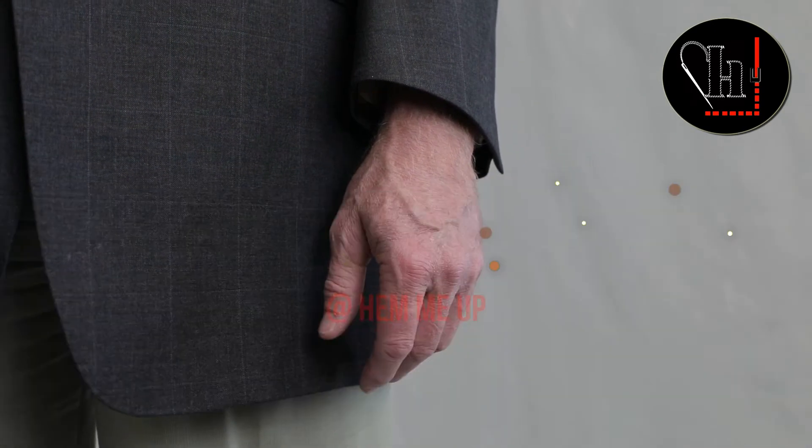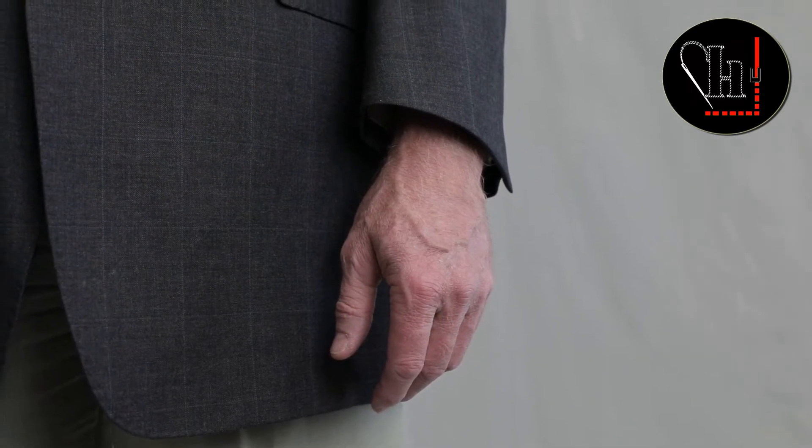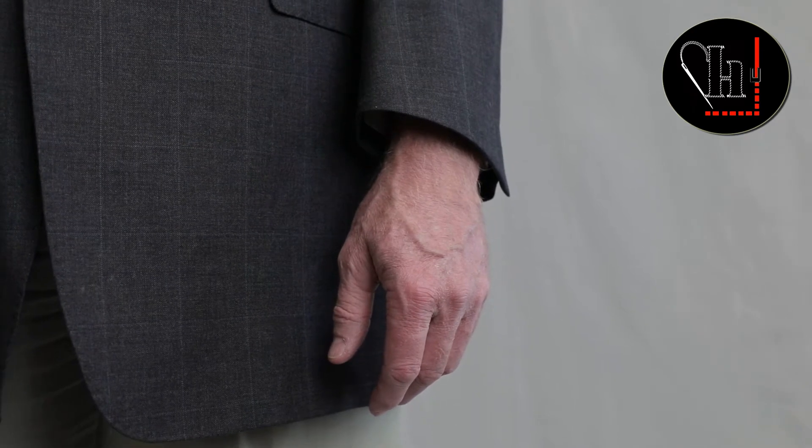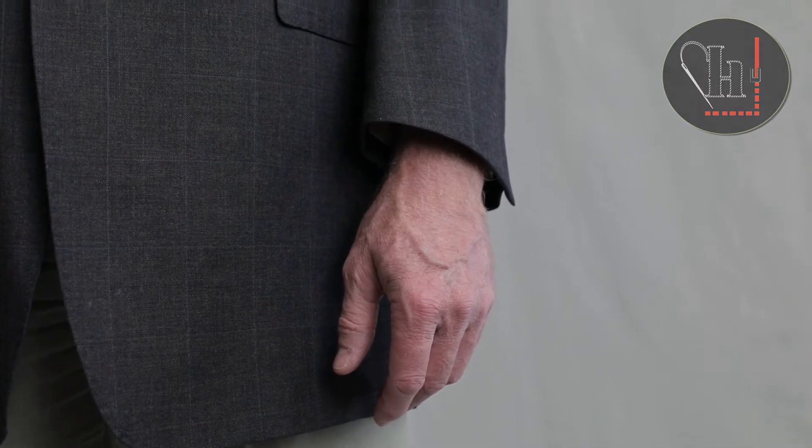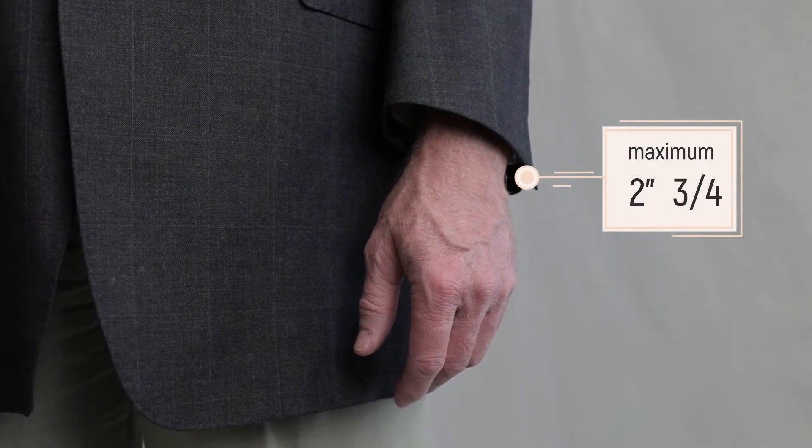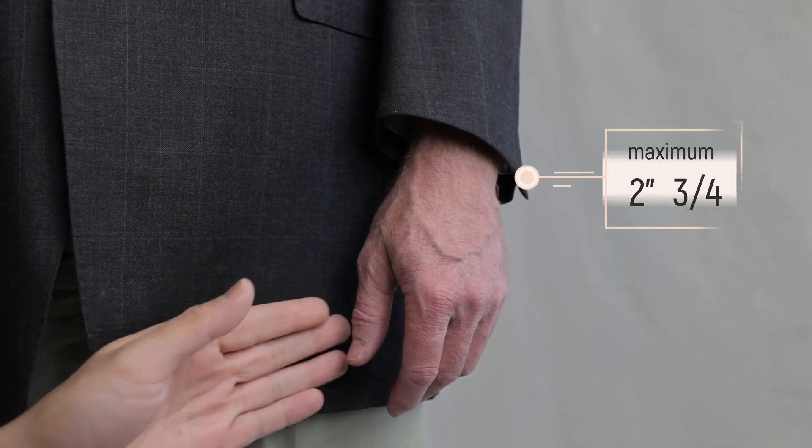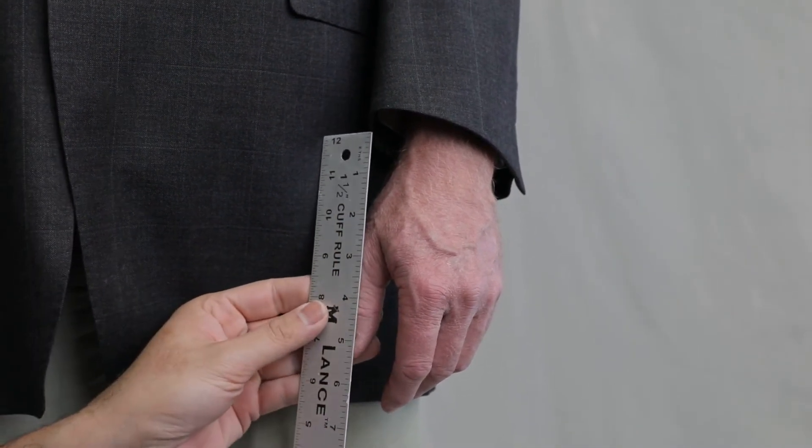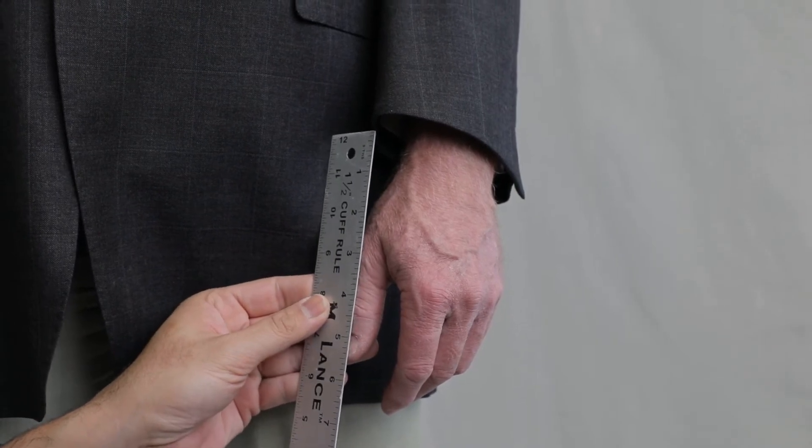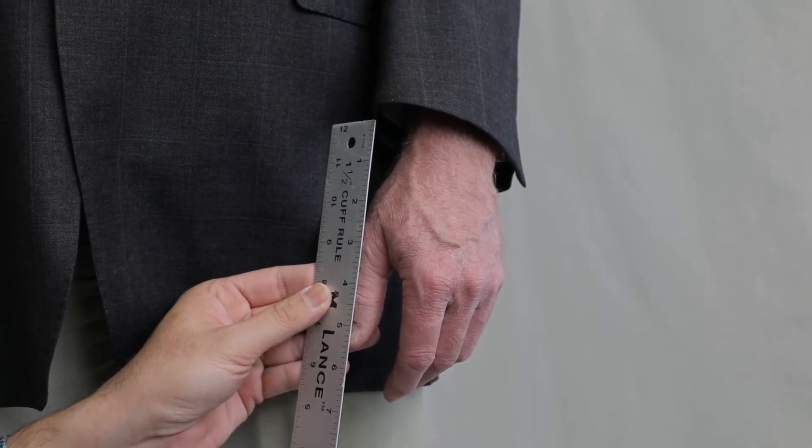Jacket sleeve lengthening measurement: if your jacket sleeve is too short, we can lengthen it a maximum of two and three quarter inches. How to measure it - again, if you have a ruler, great.